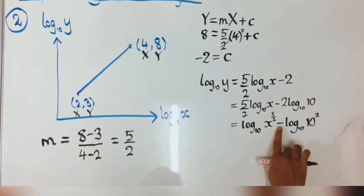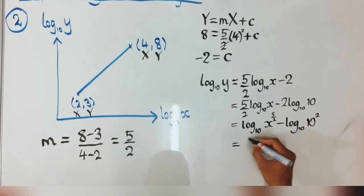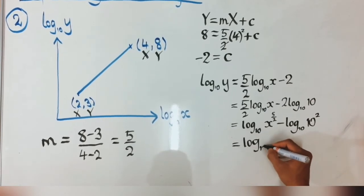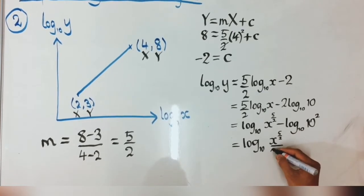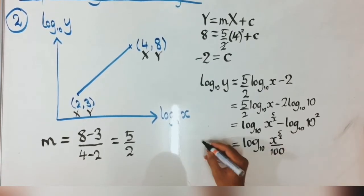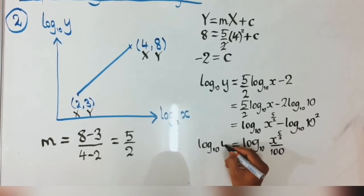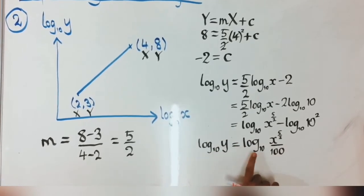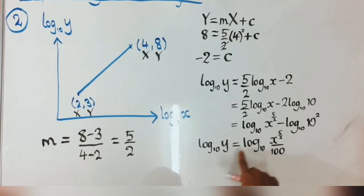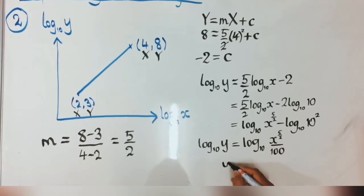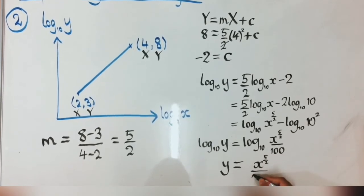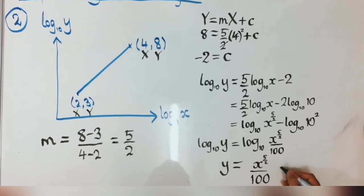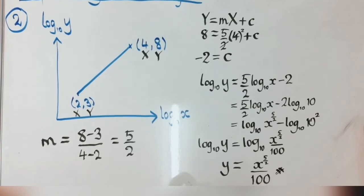Using the subtraction log law, we divide: log₁₀y equals log₁₀(x^(5/2) divided by 100). Since both sides have log₁₀ we can cancel them, giving the final answer: y equals x to the power of 5/2 over 100. That is the final answer. I'm giving you two exercises to practise, and I shall see you next week.